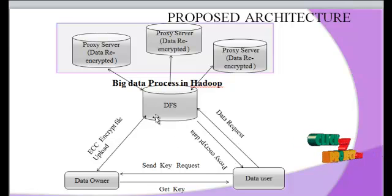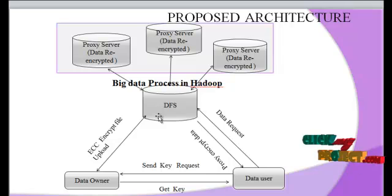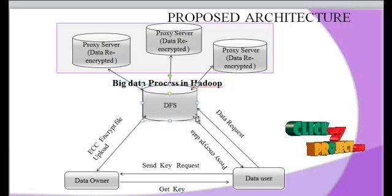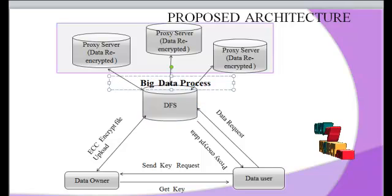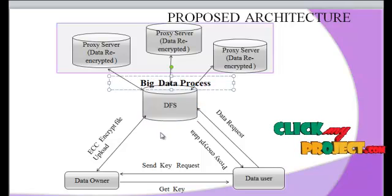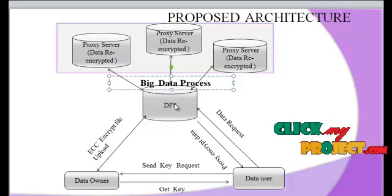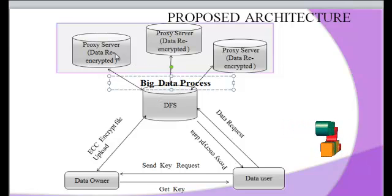The ciphertext file is stored in a DFS location — DFS stands for Distributed File Server. After storing the ECC files in DFS, the DFS forwards the encrypted file to the proxy server.